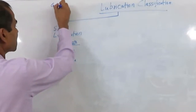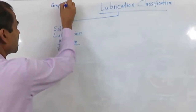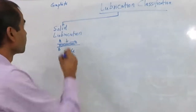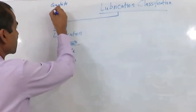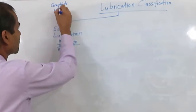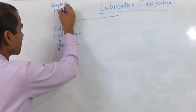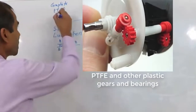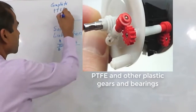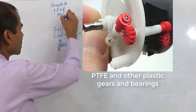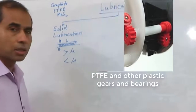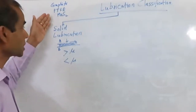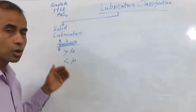We can select a material which gives us a low coefficient of friction for solid lubrication. There are many materials. For example, graphite is traditionally used as a solid lubricant. In modern days we can use plastics — for example PTFE, which gives a low coefficient of friction. Another material is called MoS2, molybdenum disulfide. These are some of the materials that can be used as solid lubricants.